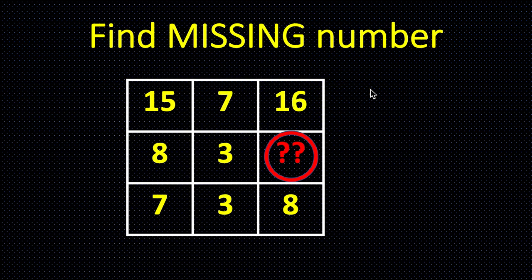15 minus 7 multiplied by 2 is 16. And in this row, 7 minus 3 multiplied by 2 is 8. So here we will do the same thing.